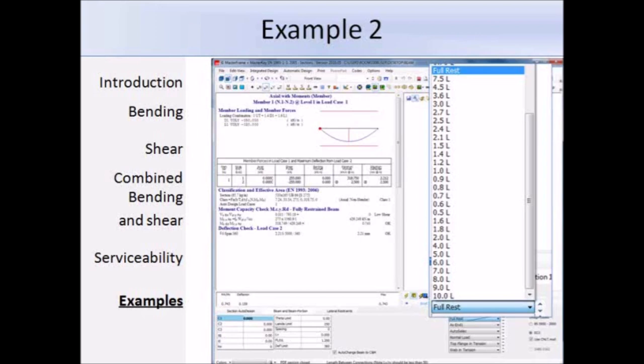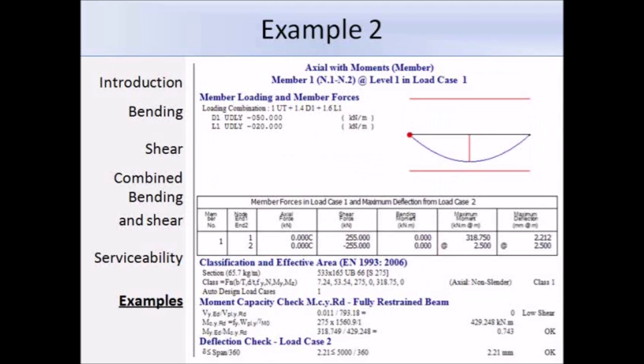Here's just a close-up of the results screen. We can see the loading at the top, the maximum values of the shear force, bending moment, and deflections are given in the table. The section is automatically classed for us, so here it's a class 1 section, the moment capacity is okay, and the deflection is okay. By using this software, we can quickly determine if a beam is suitable or not.